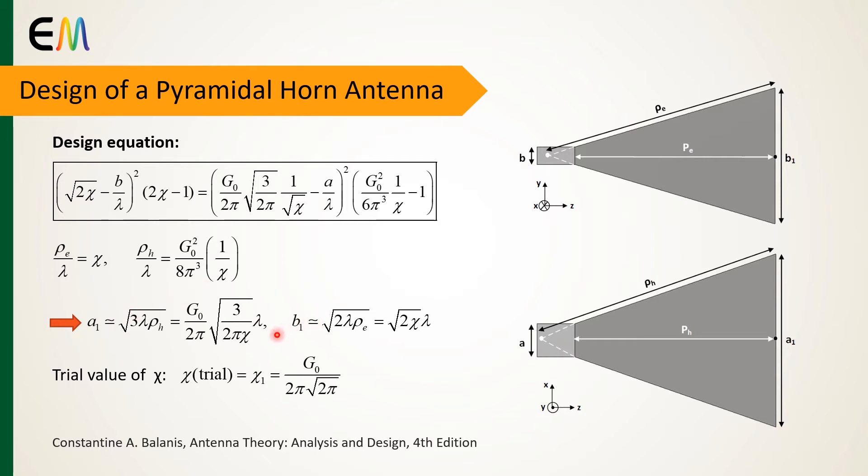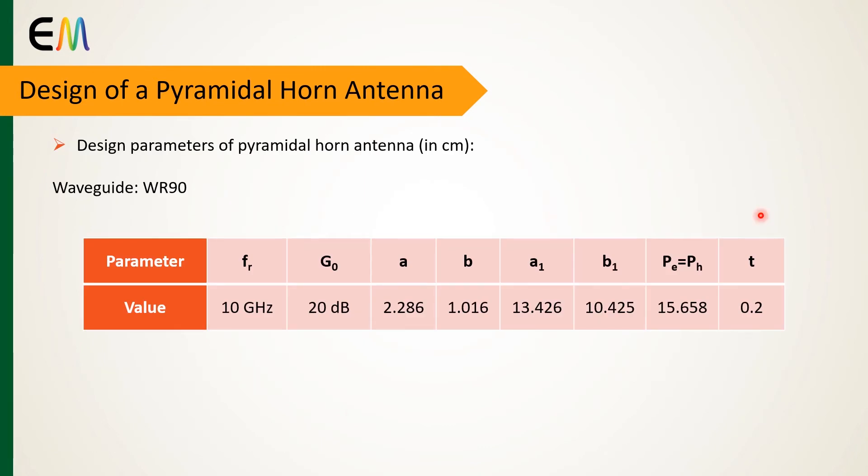To solve the design equation, we use the iterative method, and the initial value of the chi variable is considered as this relation for the first iteration.